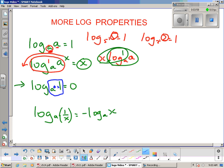When we answer that question—what power we got to put a to, to get 1—our answer is zero. That's because anything to the zero, x to the zero, always equals 1. That's what that law is based on.